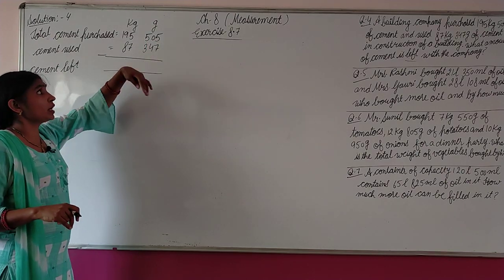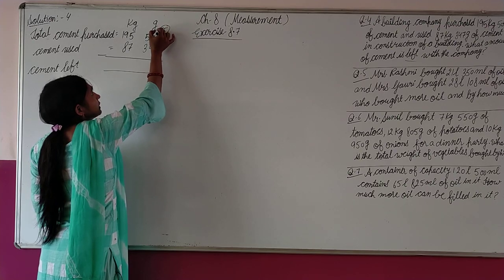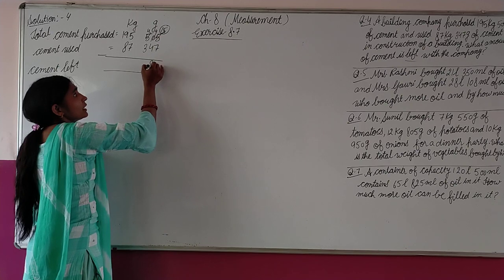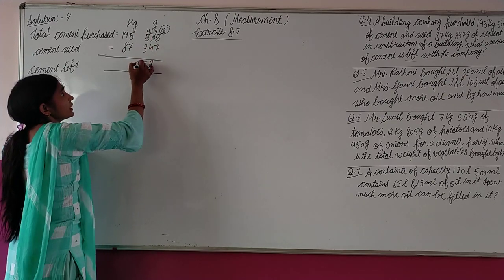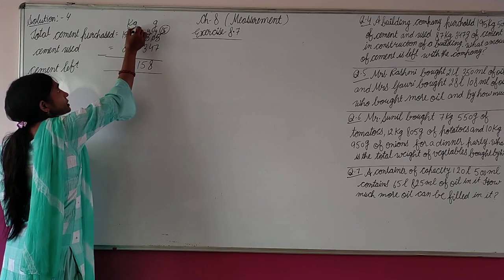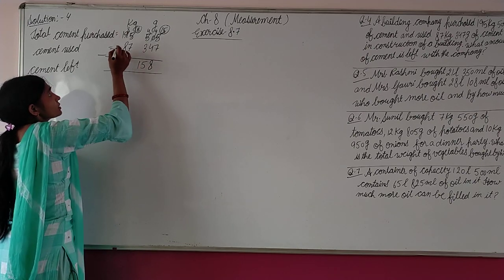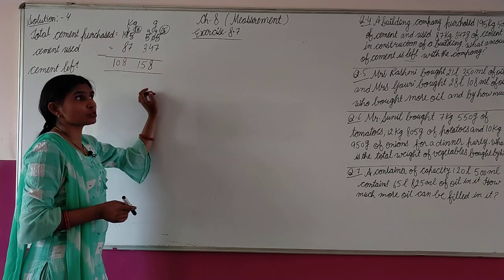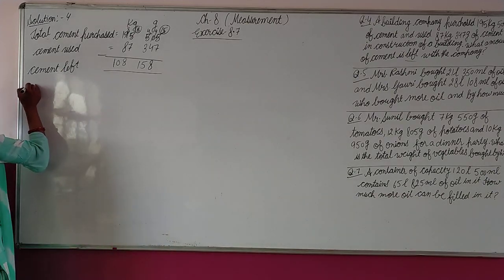5 minus 7 is not possible, so we borrow. It becomes 15. 15 minus 7 is 8. 9 minus 4 is 5. 4 minus 3 is 1. Again 5 minus 7 not possible, borrow again, it becomes 15. 15 minus 7 is 8. 8 minus 8 is 0. So cement left is 108 kg and 158 gram.